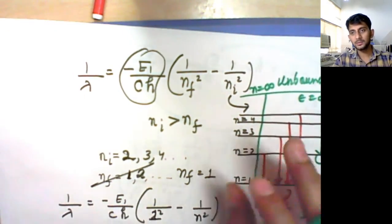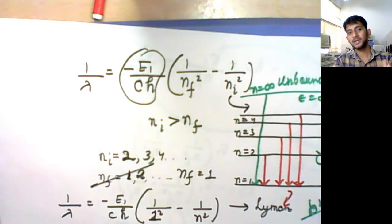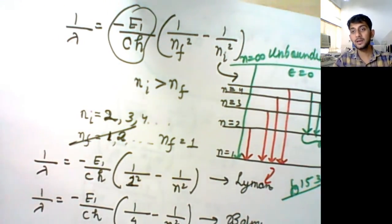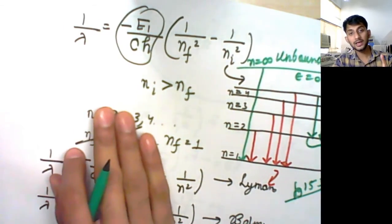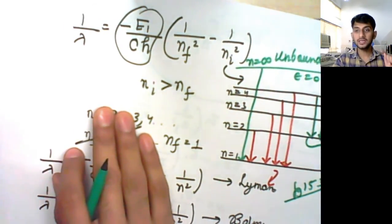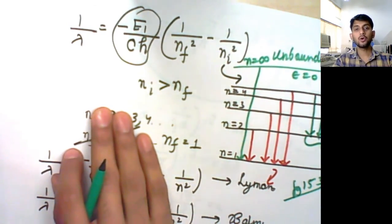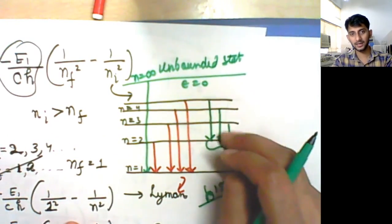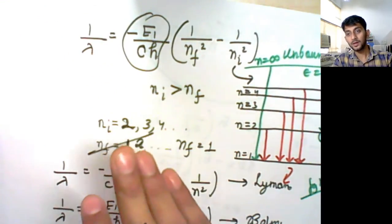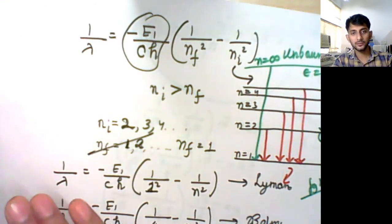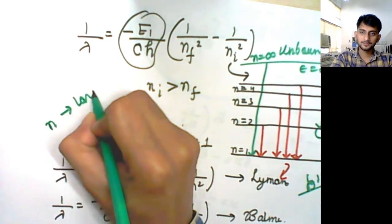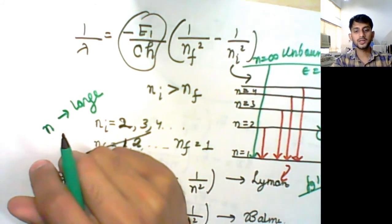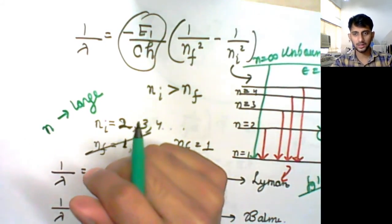This completes the total explanation of Niels Bohr's model. To summarize: the first postulate says electrons orbit in fixed orbits; the second says electrons can absorb and emit photons during transitions, explaining spectral lines. The third postulate — the correspondence principle — states that at large quantum numbers, quantum physics behaves like classical physics. This will be the topic of the next lecture.